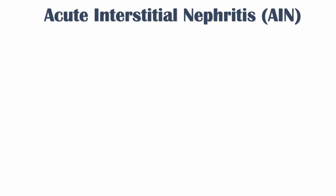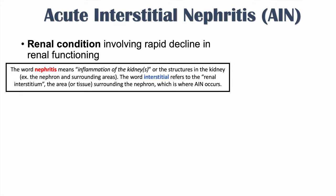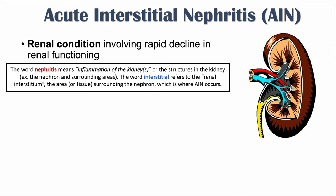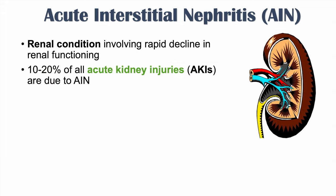Acute interstitial nephritis, or AIN, is a renal condition involving rapid decline in renal functioning. It accounts for approximately 10% to 20% of all acute kidney injuries, or AKIs. It is often a non-oliguric AKI, meaning urine volume is normal or preserved, whereas in other types of AKIs we may see a decrease in urine volume.